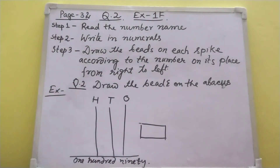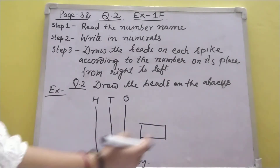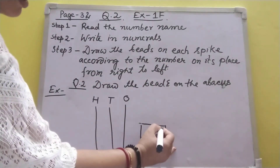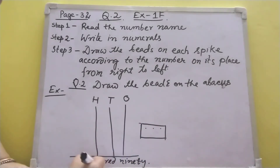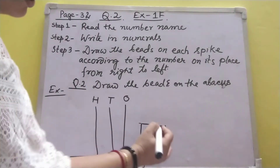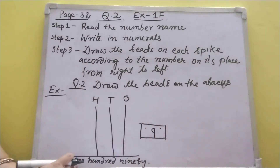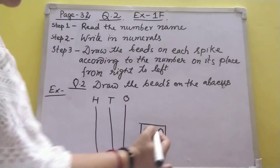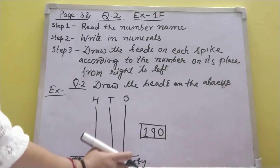Step two: write in numerals. One hundred ninety — when writing numerals from a number name, we write from right to left. In ones place: nothing is written, so put zero. Ninety is in tens place, so write 9. One hundred is in hundreds place, so write 1. The numeral is 190.